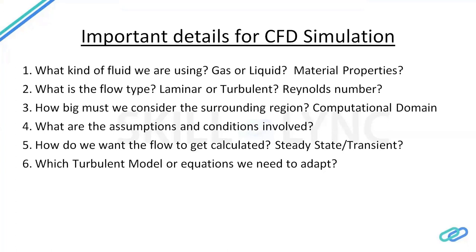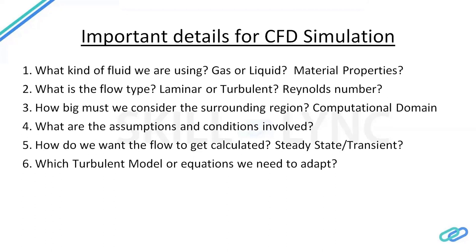Once we have answers to these questions — for example, knowing it is air or water with specific parameters — we move to the second point: what type of flow are we going to analyze? Is it laminar or turbulent? To answer this, we need to understand the Reynolds number. Reynolds was a scientist who discovered that for a particular Reynolds number, flow becomes laminar or turbulent.